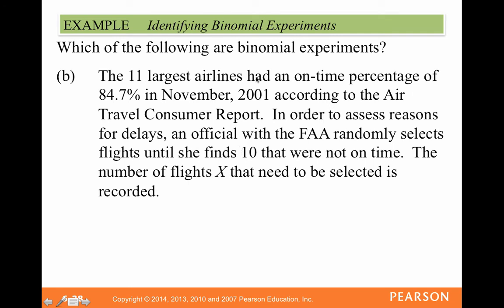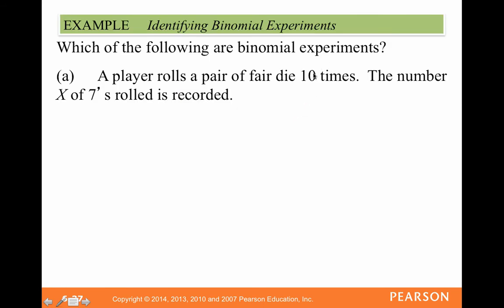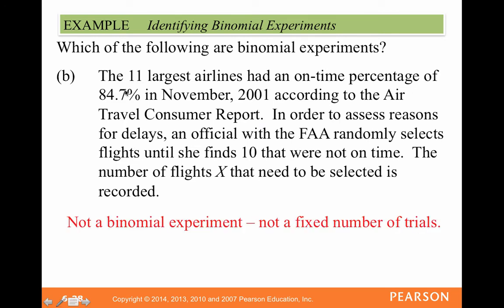Next: the 11 largest airlines had an on-time percentage of 84.7%. An official with the FAA randomly selects flights until she finds 10 that were not on time, and records the number of flights X that need to be selected. This almost sounds binomial, but it's not, because she's selecting flights until she finds 10 that were not on time — so sometimes she could select 20 flights, sometimes 10, sometimes 100. She's not running a fixed number of trials, so this first requirement fails and it is not a binomial experiment.